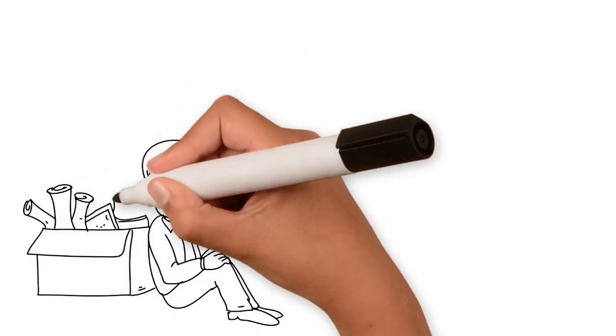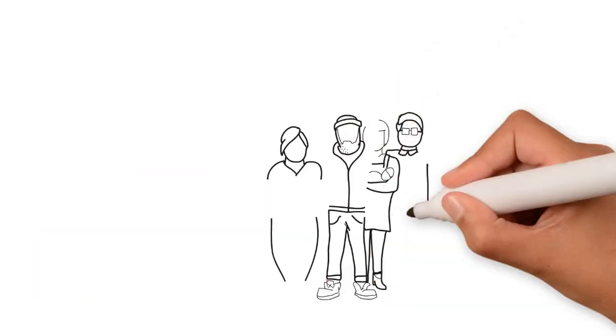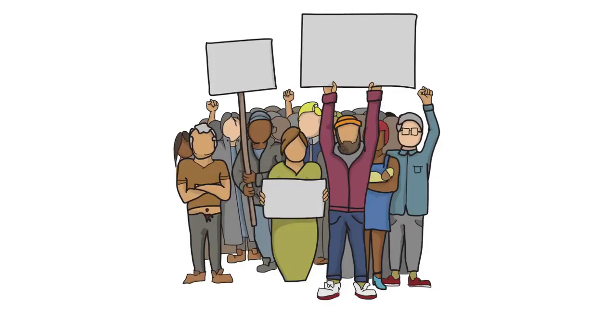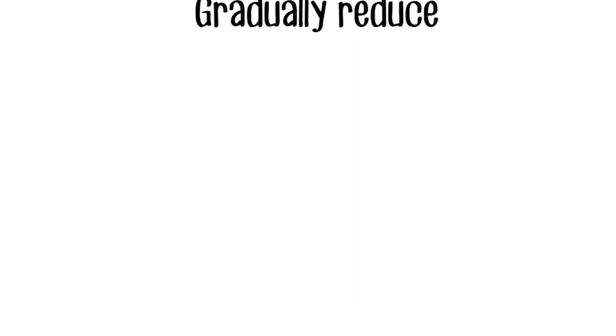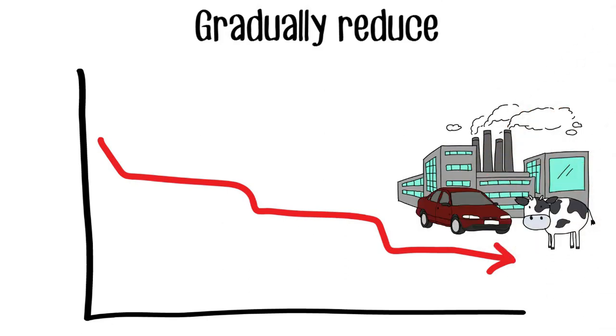This would cause people to lose their jobs, and not be able to afford to pay rent or buy food. This would cause unrest, such as protests and looting. As we need to avoid this at all costs, the only solution is to gradually reduce greenhouse gas emissions.